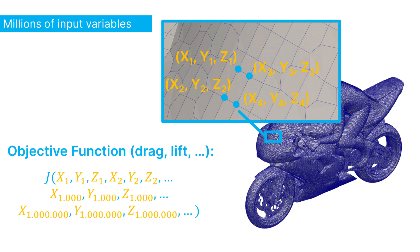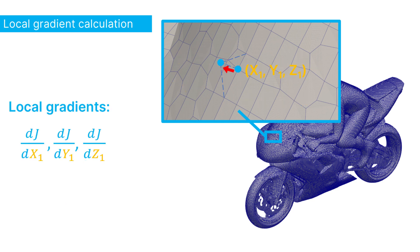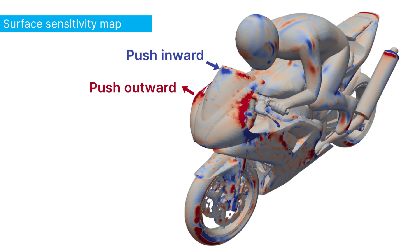Consequently, this means that each individual node has an impact on the total drag and lift of an object. The objective function has not just one but thousands if not millions of input variables, the x, y and z coordinates of each individual node. Now to obtain the local gradient, you would need to move one node individually, redo the entire aerodynamic simulation and then calculate the local gradient to know whether you should push the node inward or outward to increase or decrease the objective function. Once you have obtained all of these local gradients, you can put them all together and construct what is called a sensitivity map. This map will tell you on the entire surface of the object where to locally push it inward or outward to improve your objective function.